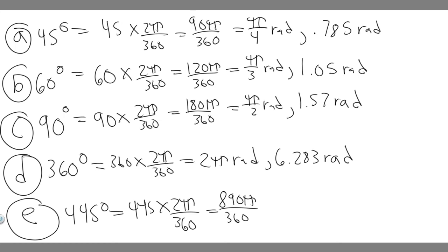And then what you can do is divide both these by 10. So just make it 89π over 36. We just divide both by 10. So 89π over 36, this is the farthest you can simplify it. So 89π over 36 radians.